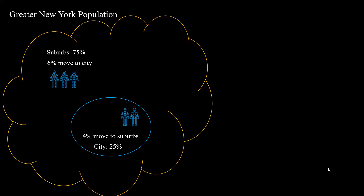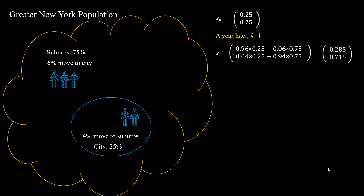How does the population split between city and suburbs change with time, if we don't consider other factors such as births, deaths, and migrations? Well, we can use matrix algebra to model the change of the population split after k years. Firstly, we let vector x0 to be [0.25, 0.75], in which the first element represents the initial population percentage living in the city, and the second element represents that in the suburbs.